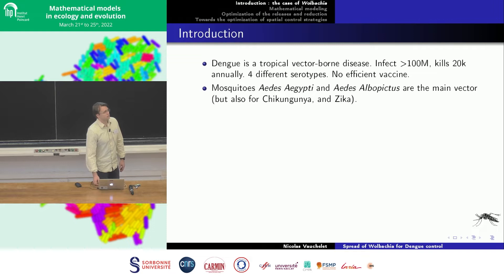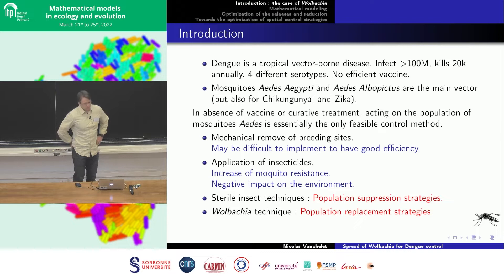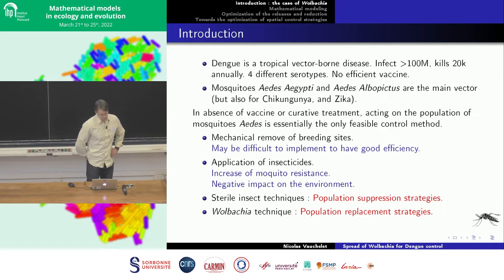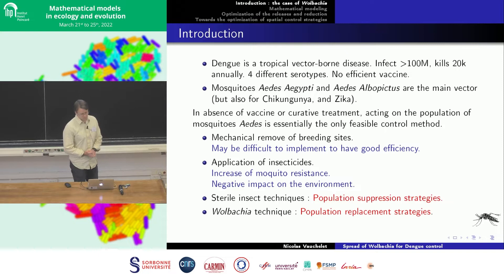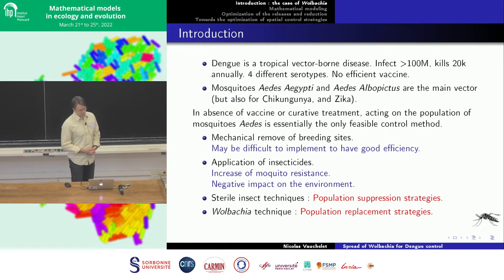If you want to control this kind of disease, there are many actions. One is to use mechanical actions — each time there is rain, you remove the water and try to clean everything. Of course, it can be efficient, but you need a lot of work. Another action is to use insecticides, but insecticides have many drawbacks: they are bad for the environment and they increase mosquito resistance. Thus, we try to avoid insecticide use.